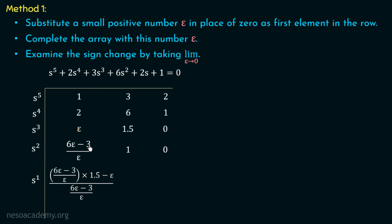For the s¹ row, the first element is [(6ε − 3)/ε × 1.5 − ε × 1] / [(6ε − 3)/ε]. The second element is [(6ε − 3)/ε × 0 − ε × 0] / [(6ε − 3)/ε] = 0. For the s⁰ row, the last term of the Routh's array equals the constant term of the characteristic polynomial, which is 1. We have completed the Routh's array with epsilon.